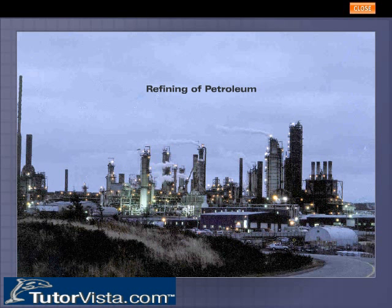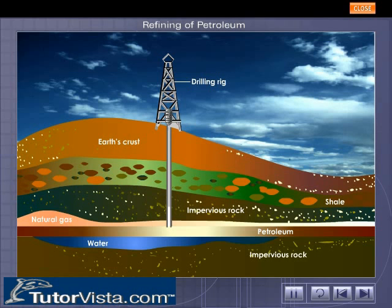Refining of Petroleum. Petroleum is obtained by drilling holes or oil wells into the earth's crust. When a well is drilled through the petroleum-bearing rocks, usually natural gas comes out first with great pressure. This is followed by crude oil, which comes out due to the gas pressure. Petroleum is separated into its constituents